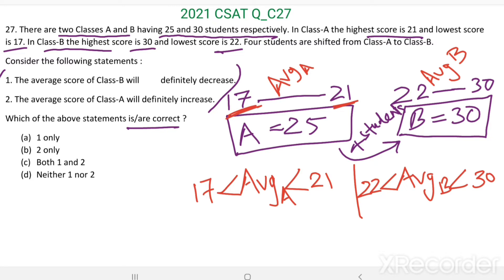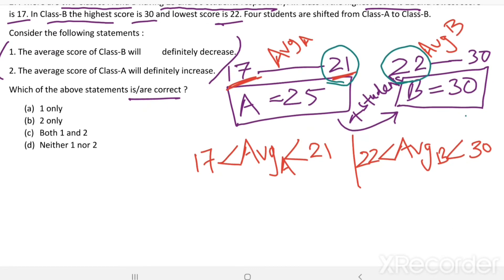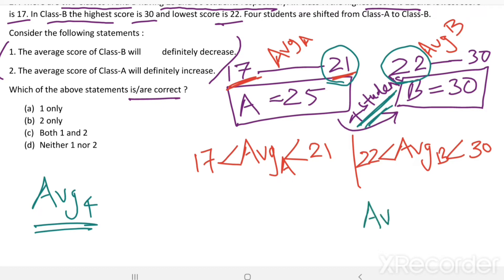We can see the highest score in class A is less than the lowest score in class B. Let us take the average of the four students shifted from class A to class B — call it average 4. This average of the four students is less than the average of class B.